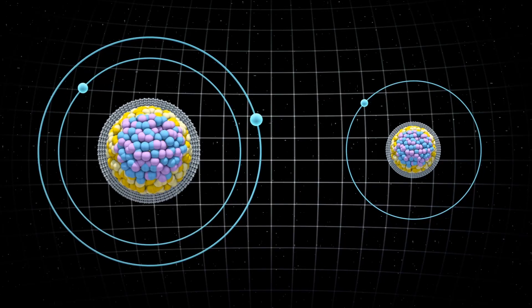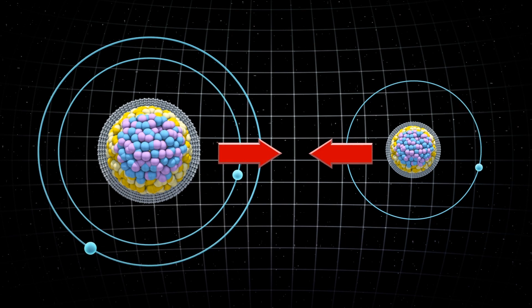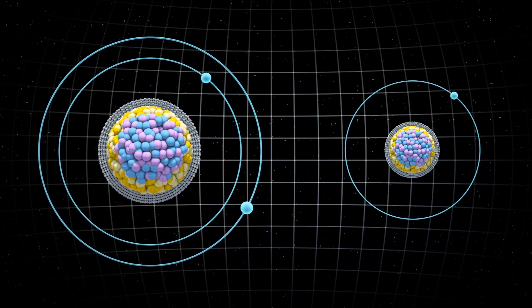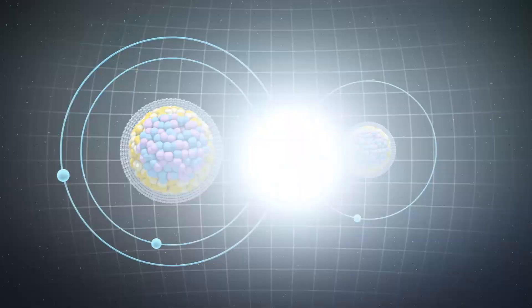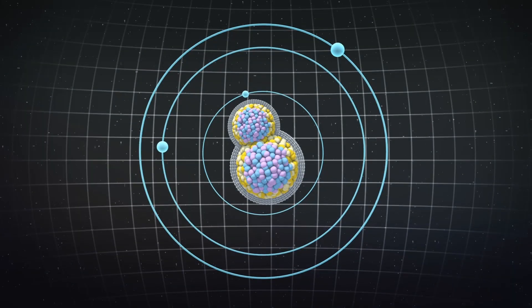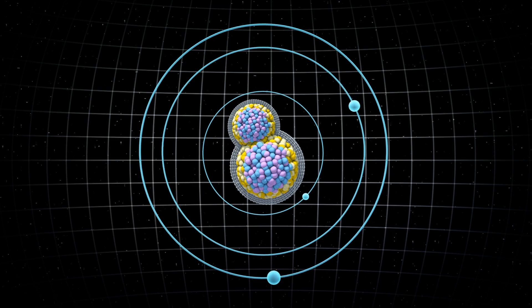Coupled quantum dots which act like artificial atoms that can share an electron could potentially form a robust qubit to revolutionize computing. According to a study in Physical Review B, scientists have created the first-ever pair of this substance.